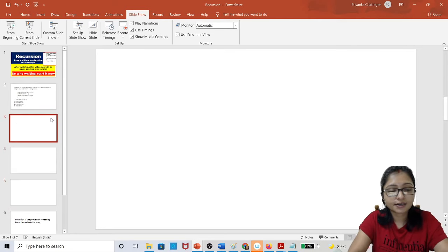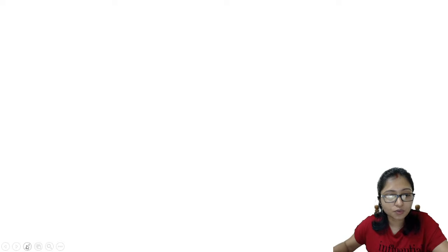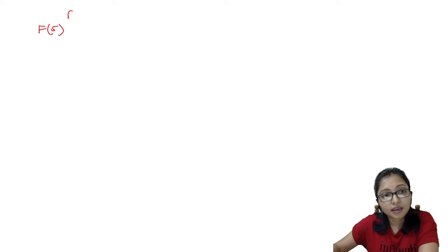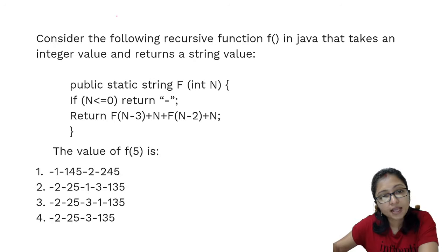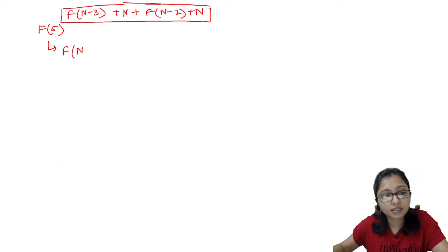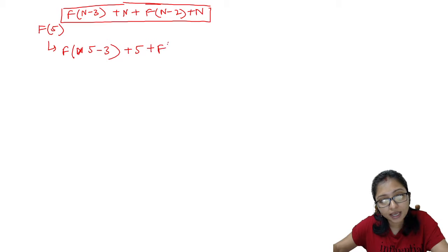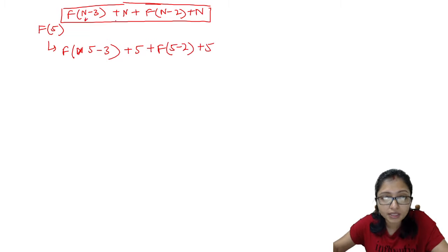Let me take a new page to discuss this clearly. This function was working like this: first of all I am calling f(5). When I call f(5), putting n=5, it becomes: f(5-3) + 5 + f(5-2) + 5. We are just putting the value of n here, nothing else.